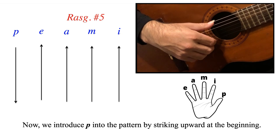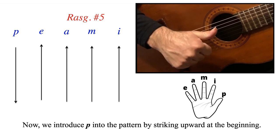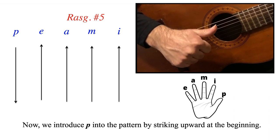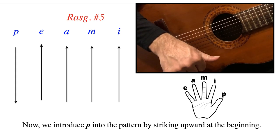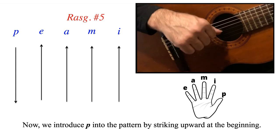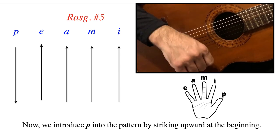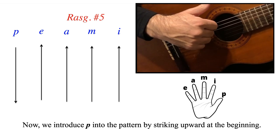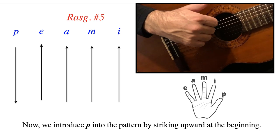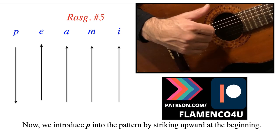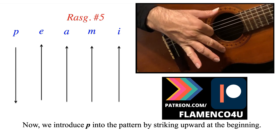Rasqueado number 5. Here we introduce the thumb, the pulgar. And here's a rule of thumb, pun intended. You scoop underneath the first string and pass along all the strings and get above the sixth string, passing the rosette when you're coming up with P. So in this case we start the rasqueado off with P up, downward E, A, M, I.